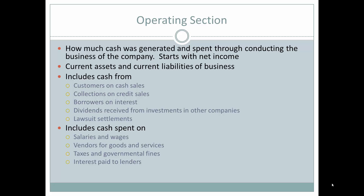If the company lent money to another party, the interest received would show up in the operating section, not the financing section. Cash outflows in the operating section include cash spent on salaries and wages, vendors for goods and services, taxes and governmental fines, and interest paid to lenders — interest paid also belongs in the operating section, not the financing section.